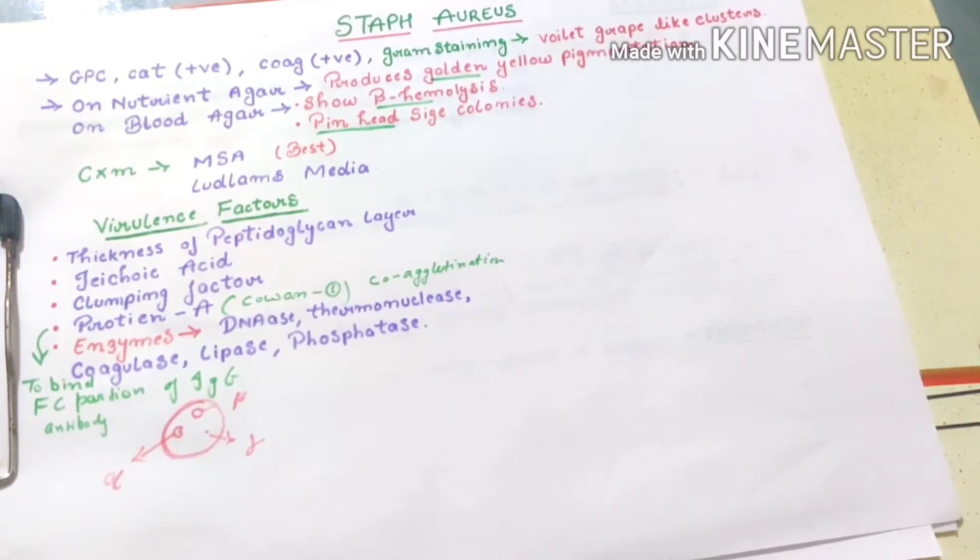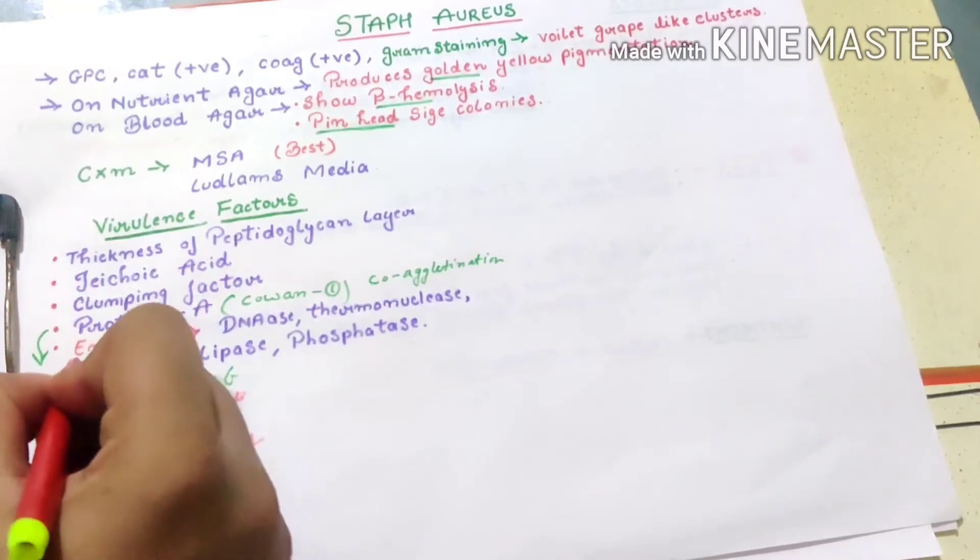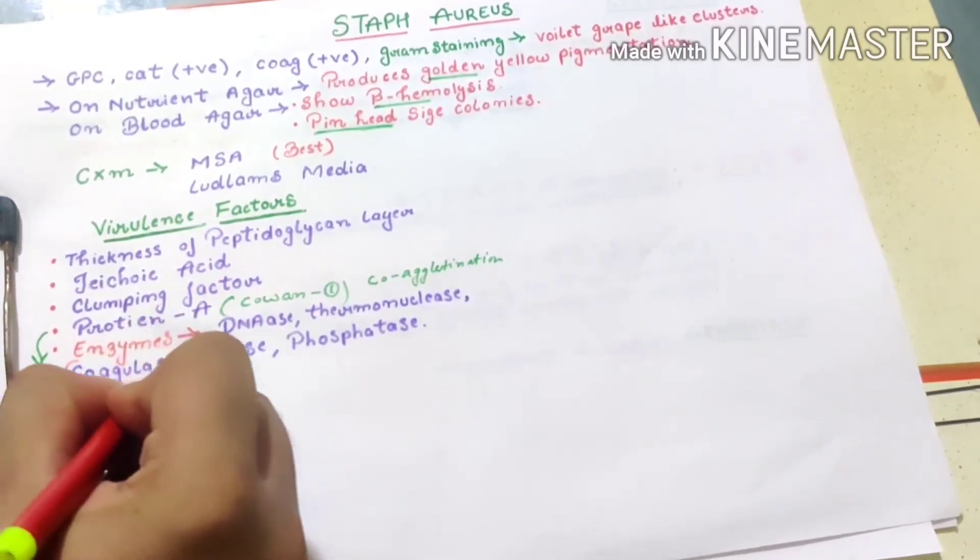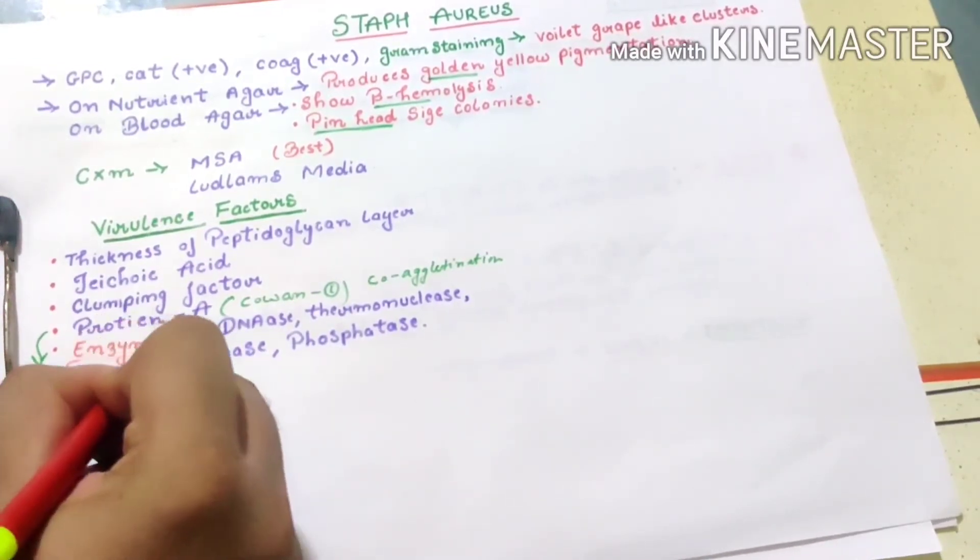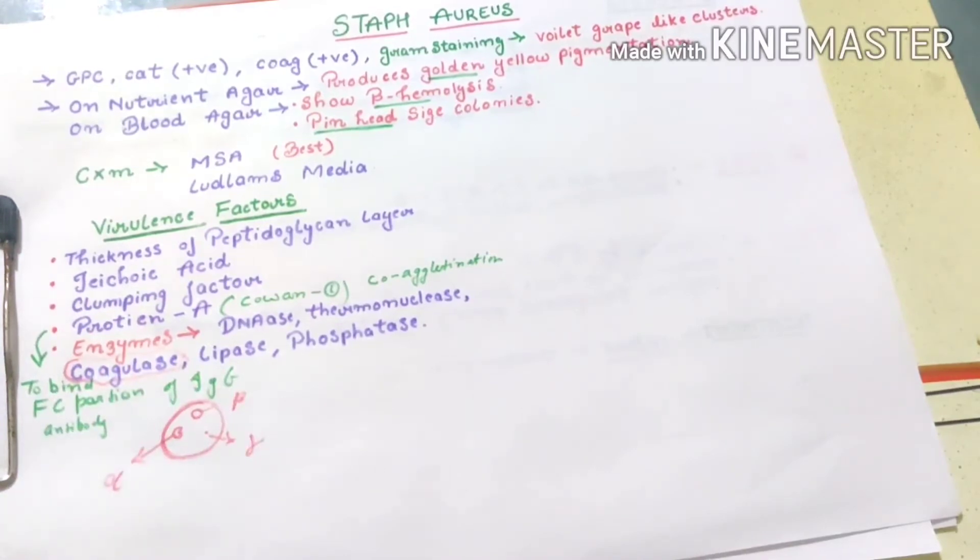Then next is enzymes. There are some enzymes which play a huge role in increasing virulence factor of Staph aureus: DNase, thermonuclease, coagulase, lipase, and phosphatase. The important one is coagulase.